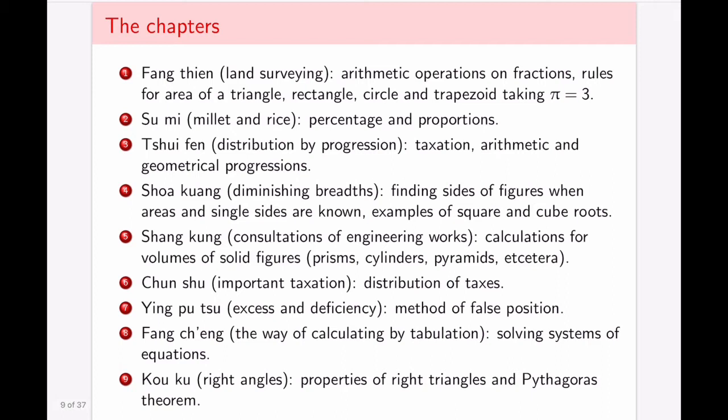So here are the chapters and a short description of what happens within each chapter. We have in the first chapter land surveying, arithmetical operations, various small geometrical results, and an approximation of pi being equal to three. Next we have millet and rice, which is actually percentages and proportions, which is likely motivated from the fact that the measuring systems had to be standardized, and so this originally contained a table which converted weights of varied grains to different kinds of measurement standards. Then we have distribution by progression, taxes, arithmetic, and geometric progressions. Diminishing breadths, which is finding sides of figures with single sides known. So you can think of like either similar triangles or something like this, but also examples of squares and cube roots.